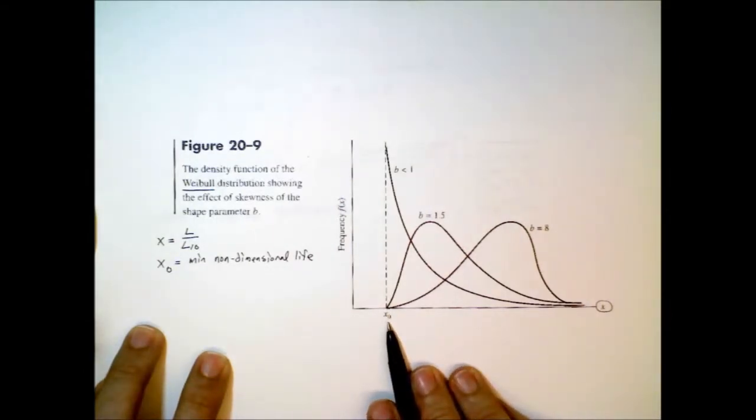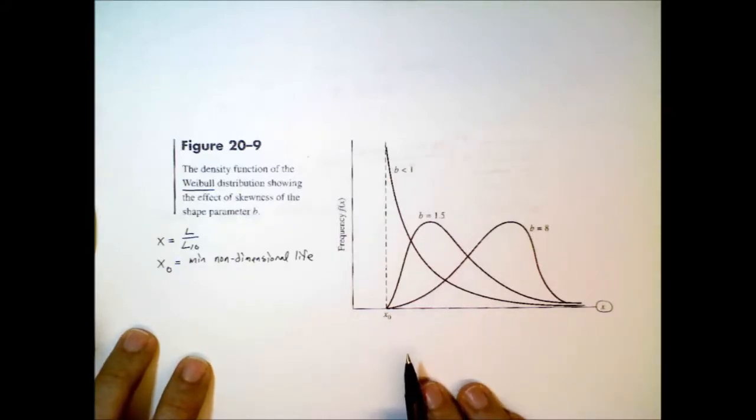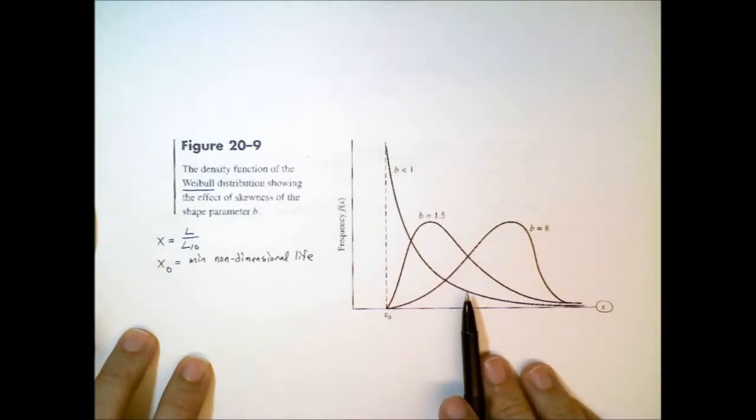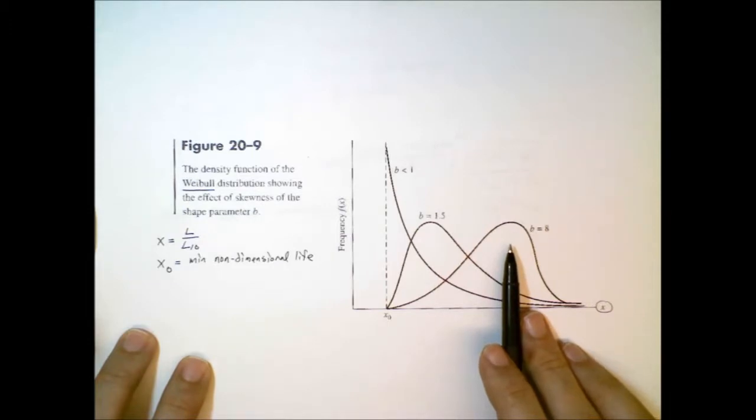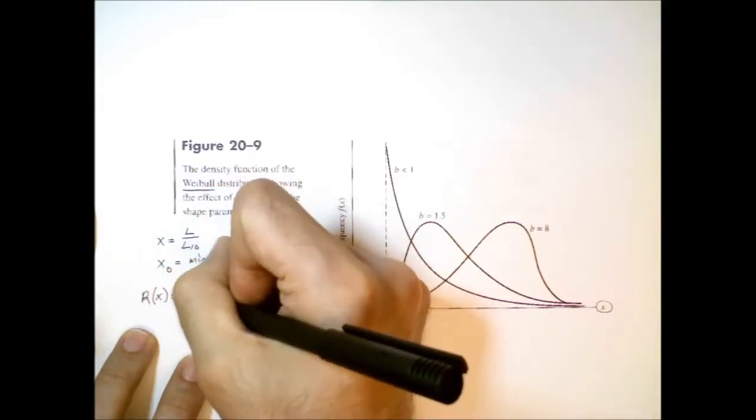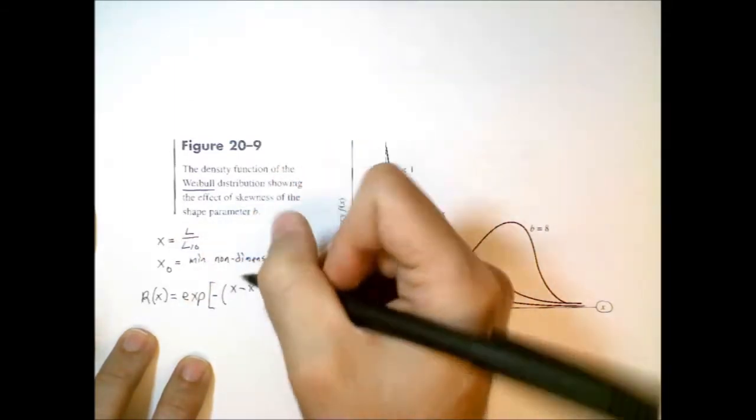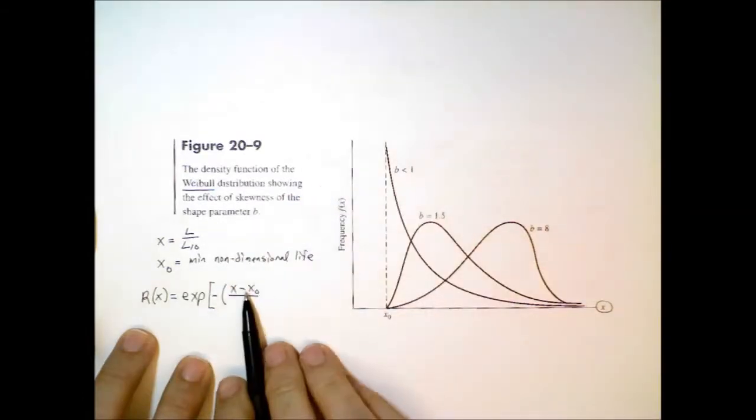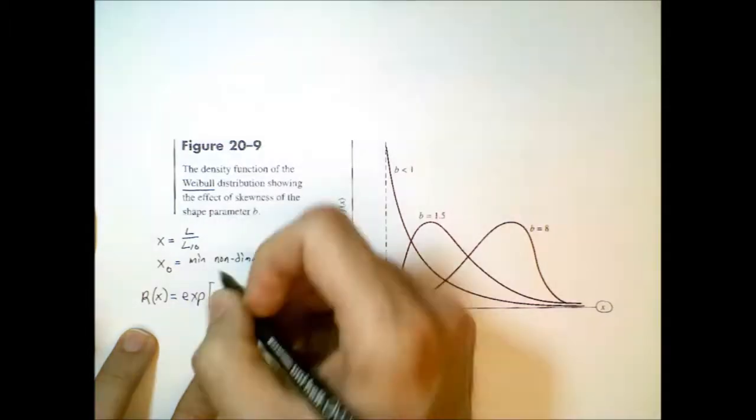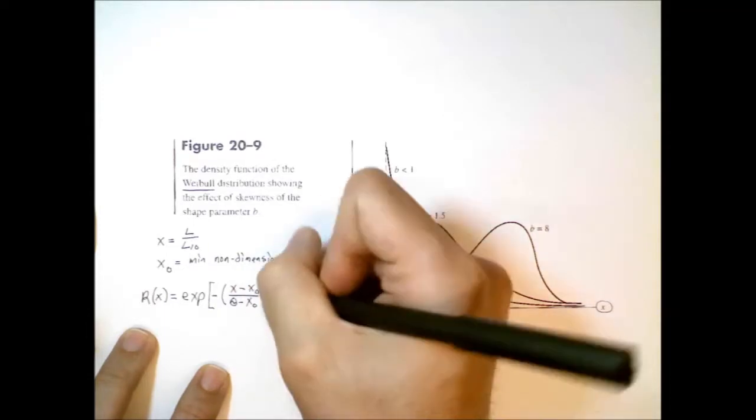In other words, we don't have any failures below x0. There are a number of parameters that help describe this distribution. I'm just going to write out the formula for the distribution. Like the Gaussian distribution, it involves an exponential, but you can see this is quite a bit different from the normal distribution. Reliability as a function of non-dimensional life is equal to the exponential of this quantity. We have x minus x0, how far away we are from the minimum guaranteed life, divided by theta minus x0. Theta is one of the new parameters, all raised to the power of b.